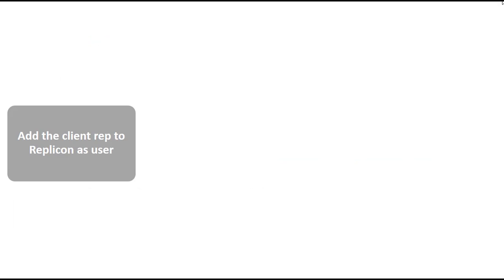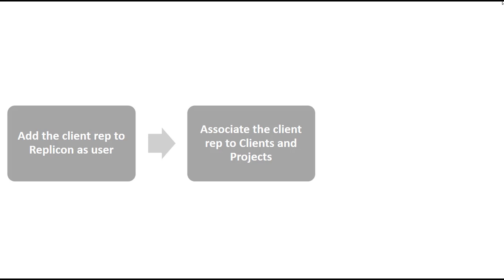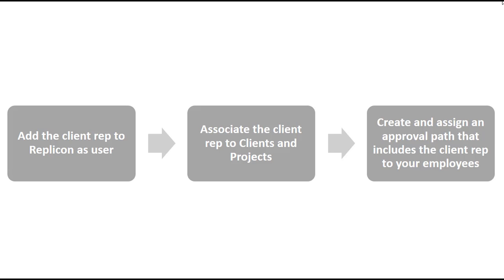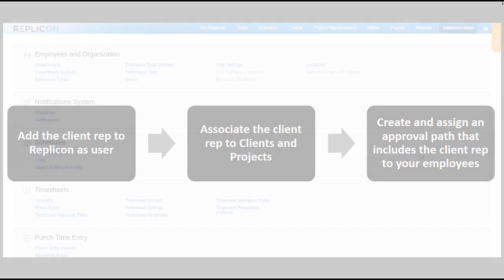To achieve this setup, you will first have to add the client rep to Replicon as a user, then associate the client rep to different clients and projects, and finally create an approval path which includes this client rep role and assign it to all the users whose timesheets should be going over to the client representative for approval.